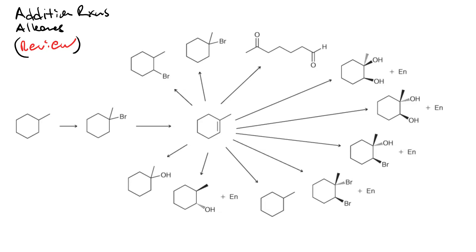Addition reactions of alkenes — a review. We're starting from an alkane, so first we have to make an alkene. We'll do that by radical bromination, which uses Br2 in the presence of ultraviolet light (hν) to give a more substituted alkyl bromide, and then we'll do an elimination reaction. Any strong base will do — how about sodium ethoxide?